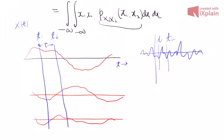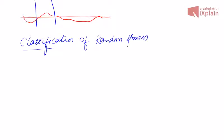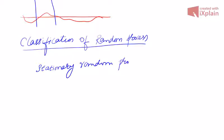Right now I want to classify random processes. There are several classifications of random processes. One of the simplest is called a stationary random process — a random process whose characteristics do not change with time.